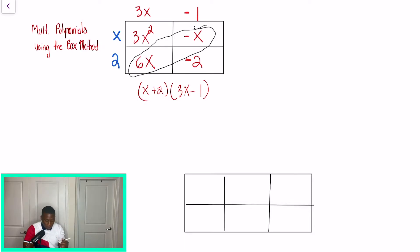So when I write this in standard form, meaning I start with the highest exponent first, we're going to start off with 3x squared. And then once we subtract x from 6x, we'll have plus 5x. And then negative 2 stays the same. And this will be our answer or the product after we multiply x plus 2 and 3x minus 1.